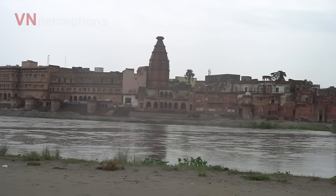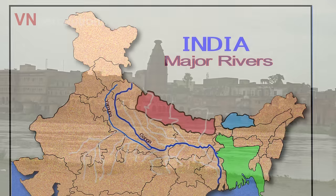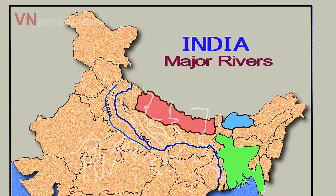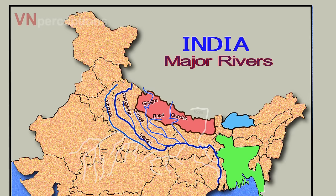The rivers joining Ganga from the north are Ram Ganga, Gomati, Ghagra — with Rapti joining Ghagra — Gandak and Kosi. River Ghagra is the largest tributary of Ganga.